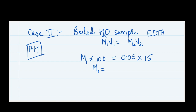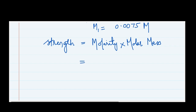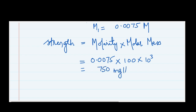Solving: M1 = (0.05 × 15) / 100 = 0.0075 mol per liter. To convert to hardness, multiply by the molar mass of calcium carbonate: 0.0075 × 100 = 0.75 gram per liter. Multiply by 1000 to convert to milligram per liter, giving 750 milligram per liter, or 750 ppm. So the permanent hardness is 750 ppm.